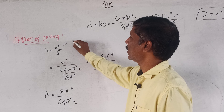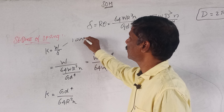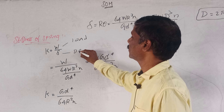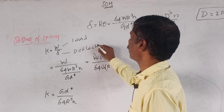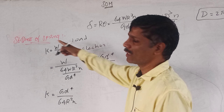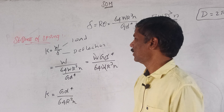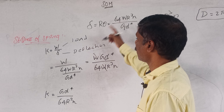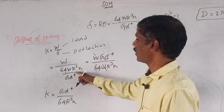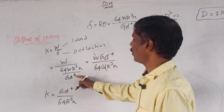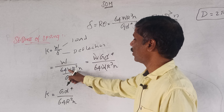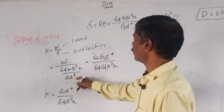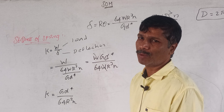The formula is 64WR³ divided by d⁴ times G. This is D, and 8WD³ divided by d⁴. This is D, which is equal to 2 times the radius.